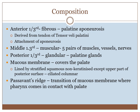The composition of the soft palate is fibromuscular and glandular, covered by mucous membrane. The anterior one-third is fibrous, formed by the palatine aponeurosis derived from the tendon of tensor veli palatini. The middle one-third is formed by five pairs of muscles, vessels, and nerves. The posterior one-third is glandular, formed by the palatine glands.